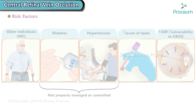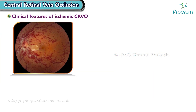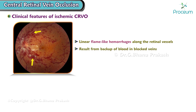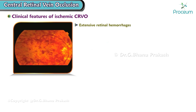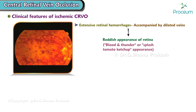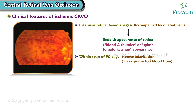Now let's go over the clinical features of ischemic central retinal vein occlusion. Linear, flame-like hemorrhages are observed along the retinal vessels, resulting from the backup of blood in the blocked veins. White patches known as cotton wool spots appear on the retina due to infarction of the nerve fiber layer. Extensive retinal hemorrhages with dilated veins give the retina a reddish appearance, resembling a blood and thunder or splash of tomato ketchup appearance. Within 90 days, neovascularization may occur, leading to the development of secondary glaucoma.